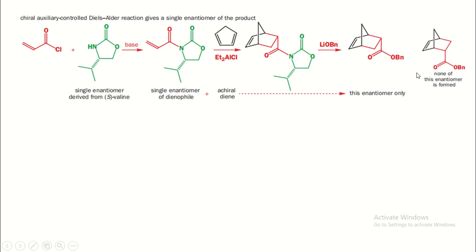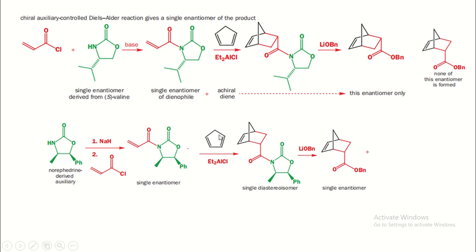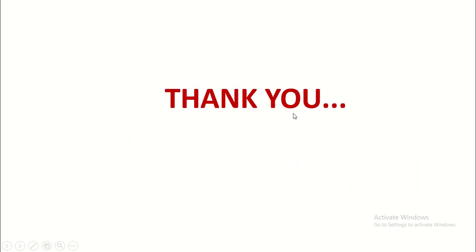In the second reaction, a base abstracts the proton from NS, so N⁻ attacks the carbonyl carbon and the series is removed to form the active product — requiring a single enantiomer. This single-enantiomer dienophile reacts with the diene to give only one product, not the racemic form, because at the front side there is steric hindrance. Therefore the diene approaches from the below side, so substitution occurs at the lower carbon, not the upper carbon. LiOBn again — OBn attacks the carbonyl carbon and the chiral auxiliary is recovered. In the next video I will complete this topic. Thank you so much, take care.